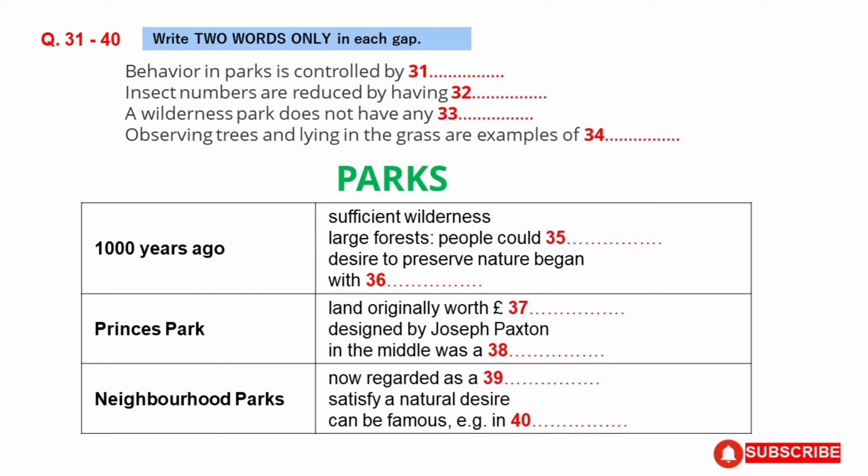The first park expressly designed for that purpose is usually considered to be Prince's Park in Liverpool. This was in 1841, on land donated to the public by a rich iron merchant. With such a generous donation, worth about £50,000, the council decided to invest £5,000 of its own money in making it look good.